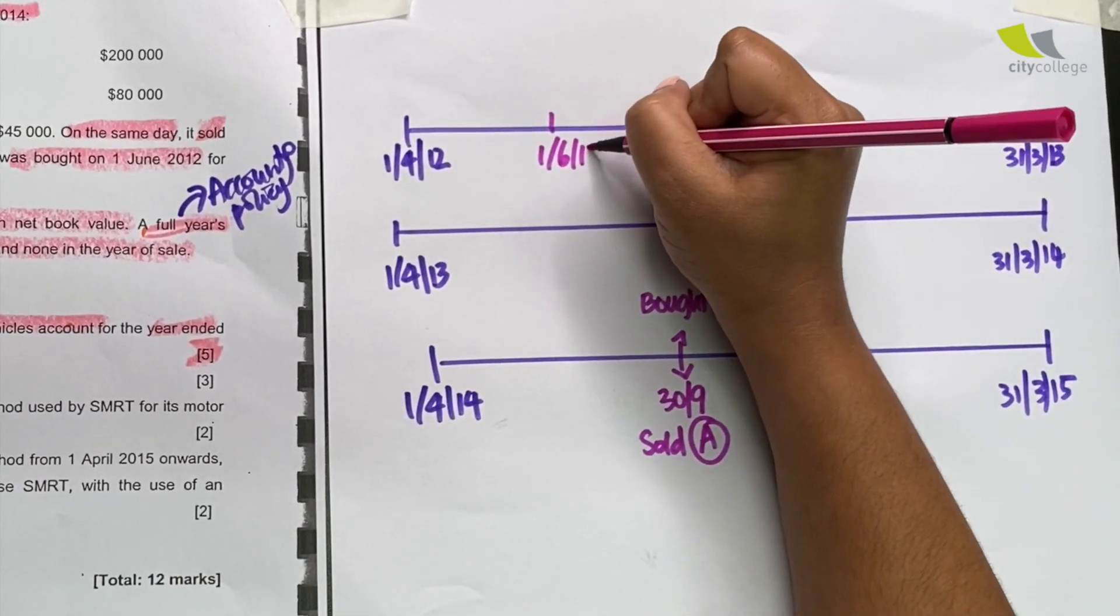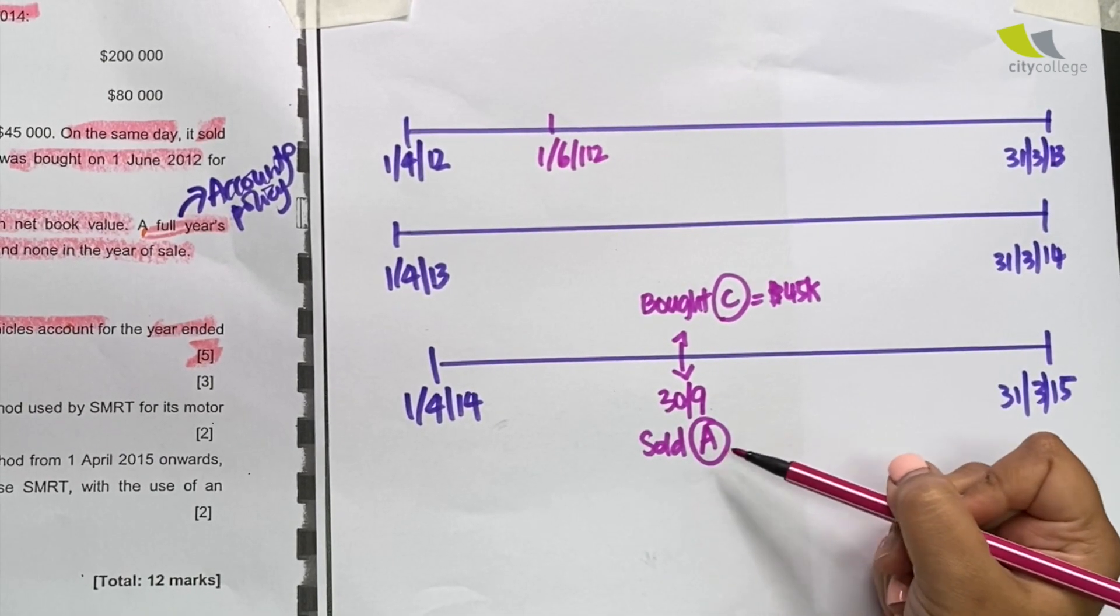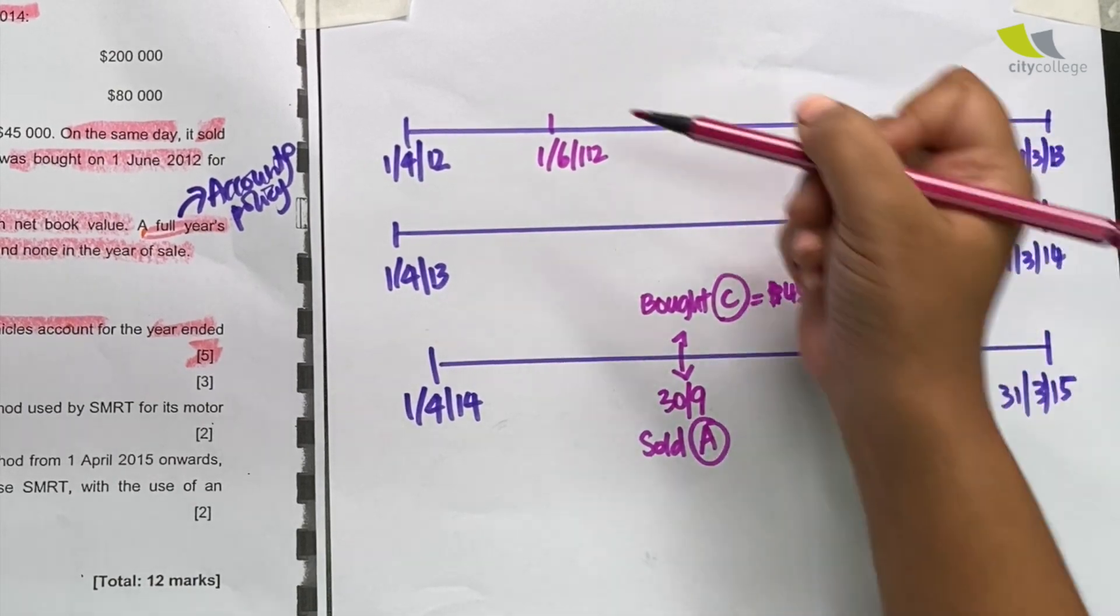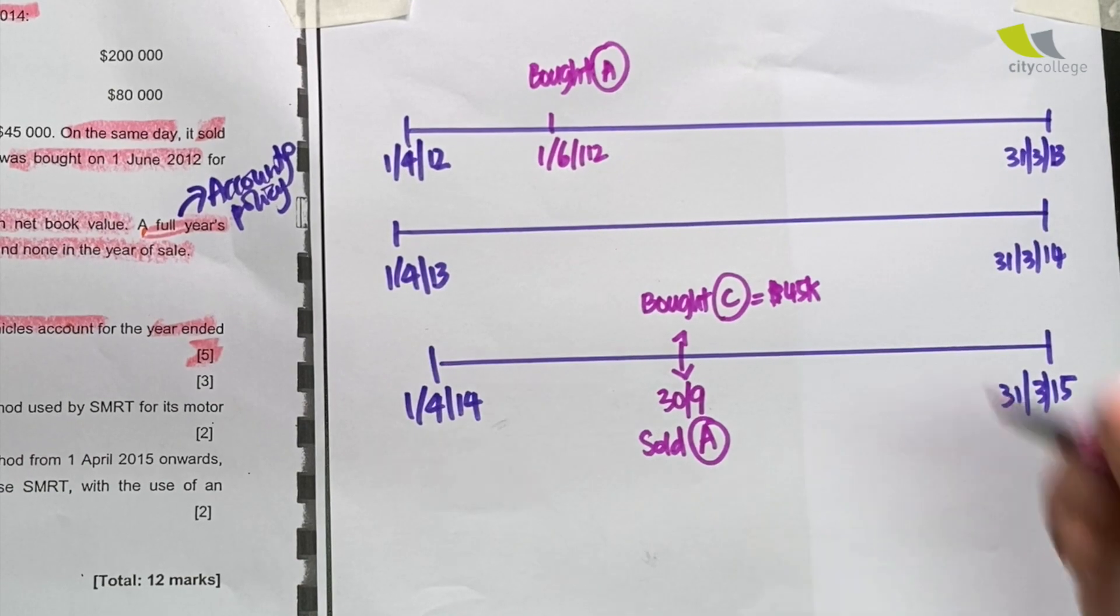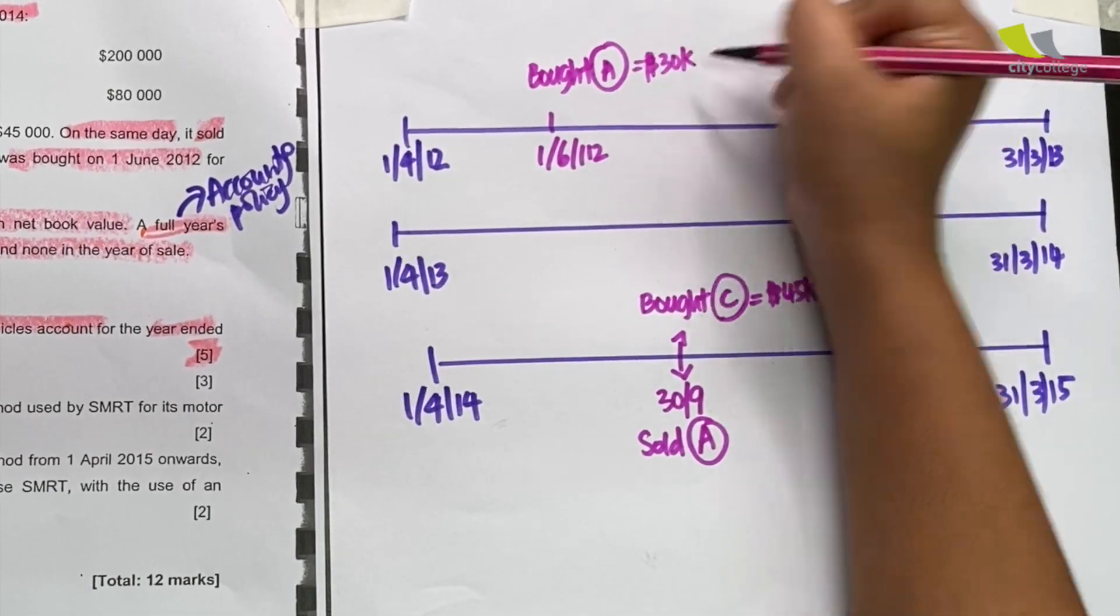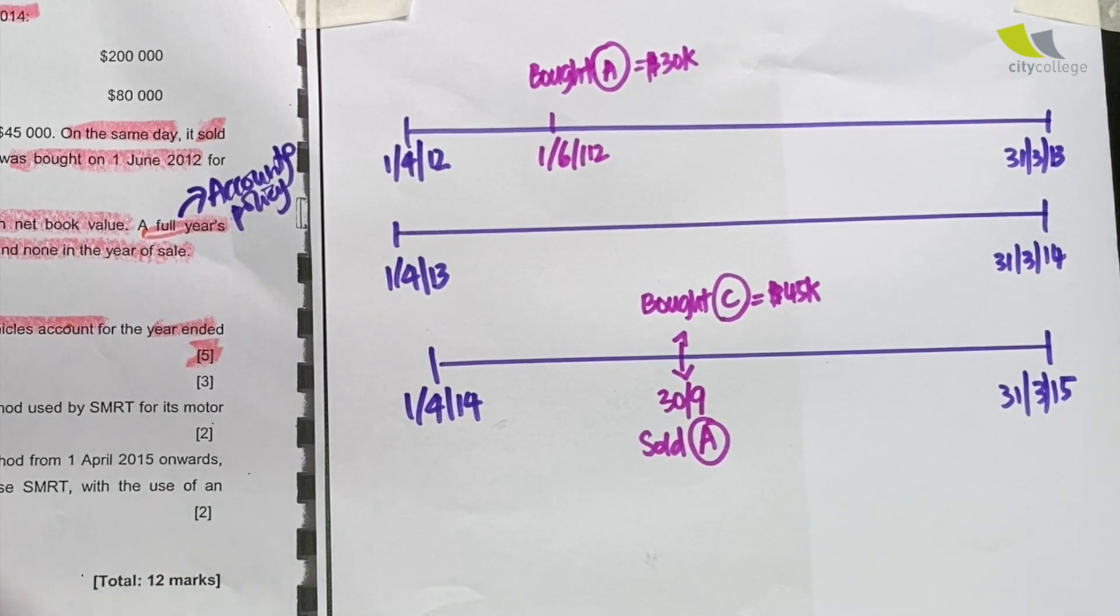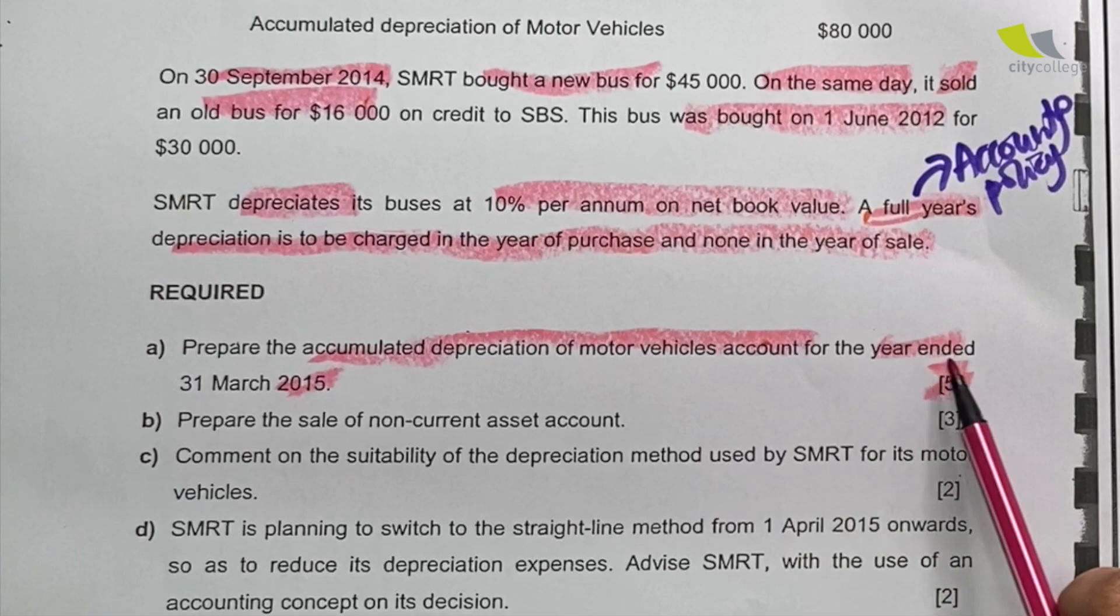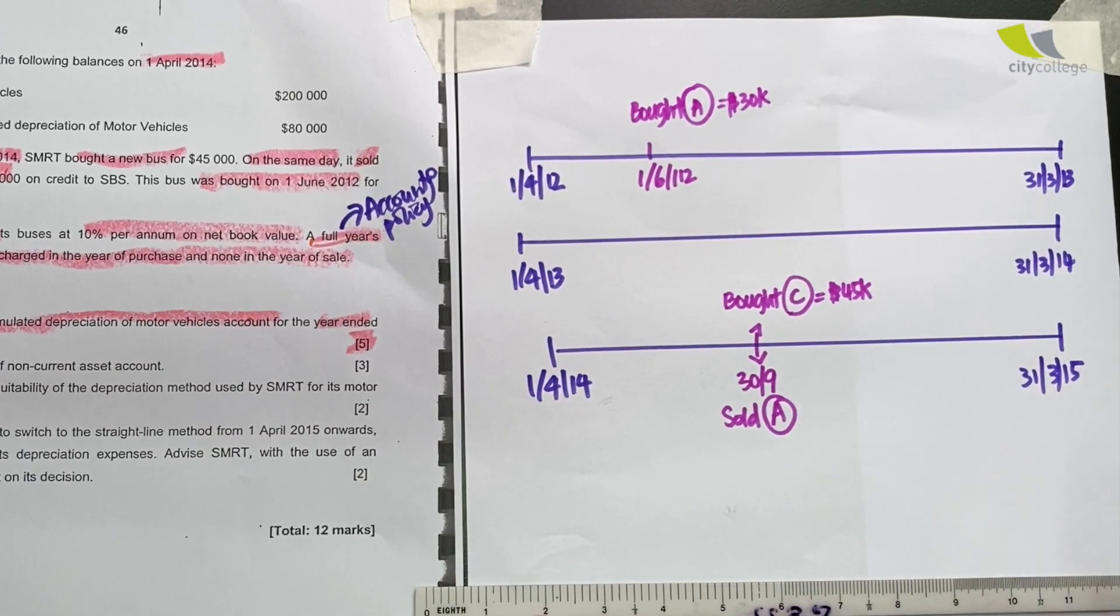1st June 2012. What happened here? It says that this asset A that I sold here was bought. So let me write here. How much did I buy it for? I bought it for $30,000. So I have now drawn 3 years of timeline. But which year is the question asking me to prepare the account for? Only for the year ended 2015, which is the last year.